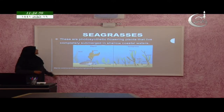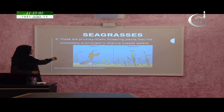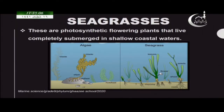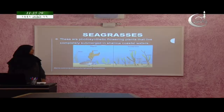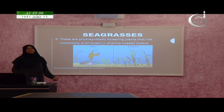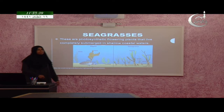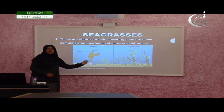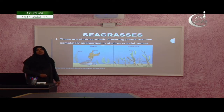Seagrasses and algae are two different things. Both are able to photosynthesize; however, seagrasses have leaves, roots, and they bear flowers, seeds, and fruits. They are actually submerged plants found in the marine environment, nearly always in coastal waters closer to the land area. Seagrasses are considered plants while algae are considered protists.